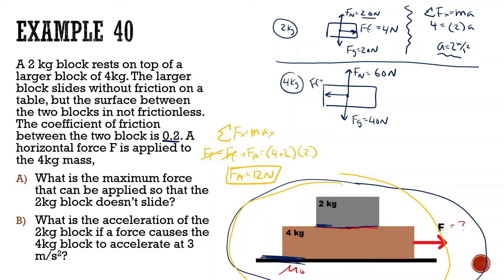If this is pulled with more than 12 newtons, the top block is going to start to slide off. At 12 newtons, the whole system accelerates at 2 meters per second squared, meaning the top block is able to stay on. If the force exceeds that, the top block will start to fall off.